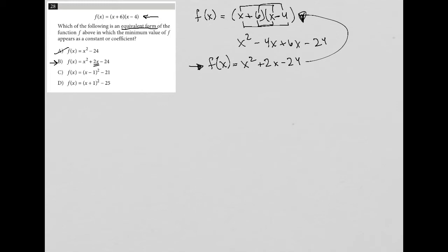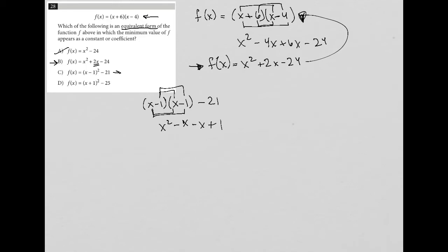C and D are intriguing — they're in a very different format. If this looks familiar, you might recognize it as the vertex form of a parabola. Let's simplify choice C: x minus 1 squared minus 21. FOILing gives x squared minus 2x plus 1, then minus 21, which is x squared minus 2x minus 20. That's not equivalent to our function, so C is out.